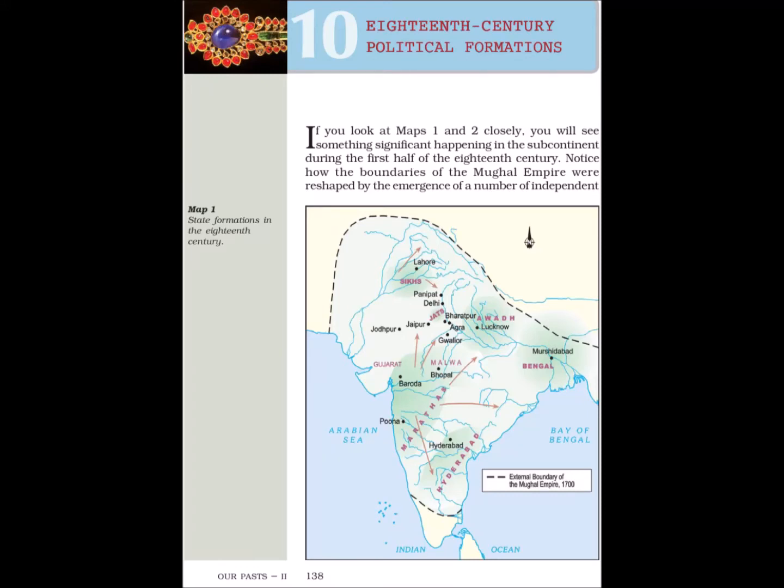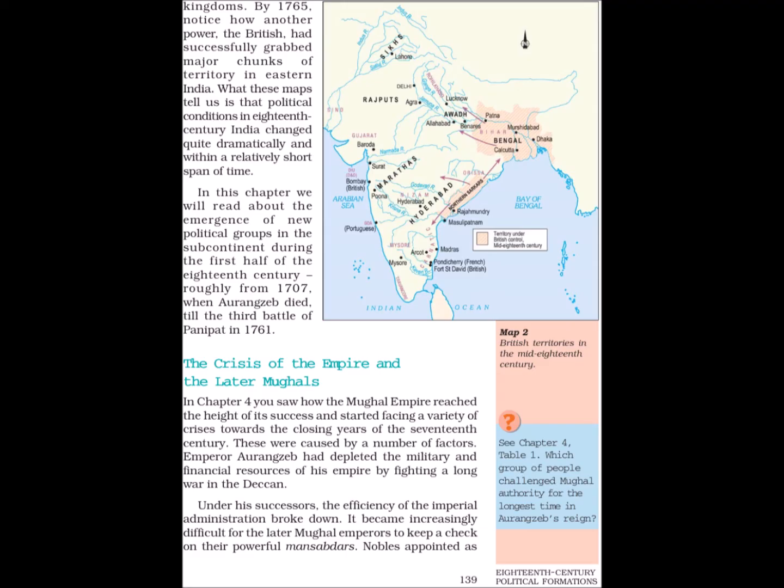18th century political formations. If you look at maps 1 and 2 closely, you will see something significant happening in the subcontinent during the first half of the 18th century. Notice how the boundaries of the Mughal Empire were reshaped by the emergence of a number of independent kingdoms. By 1765, notice how another power, the British, had successfully grabbed major chunks of territory in eastern India.